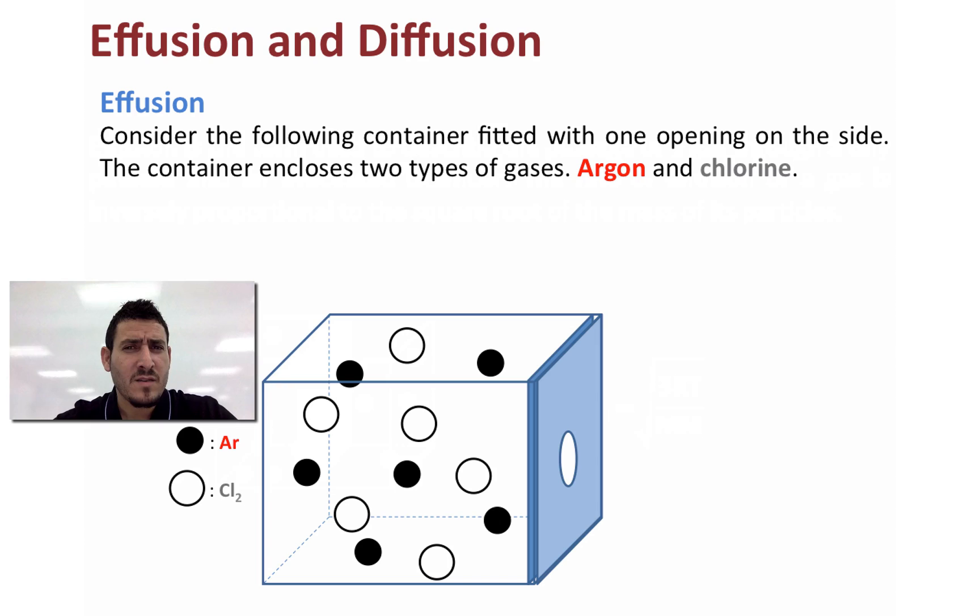Now let's discuss the following practice example. Consider the following container fitted with one opening on the side. The container encloses two types of gases, argon and chlorine. The question now, how many particles of argon will escape if only three particles of chlorine escape?